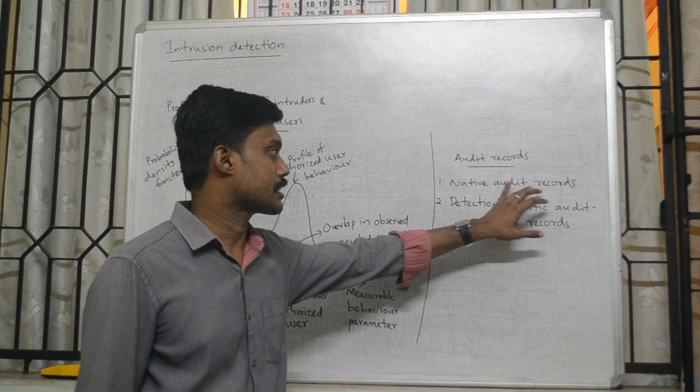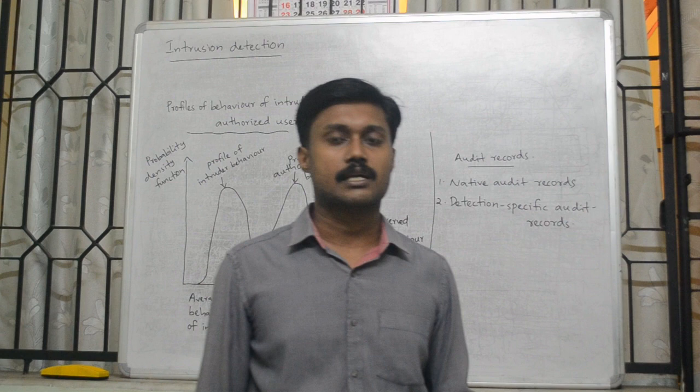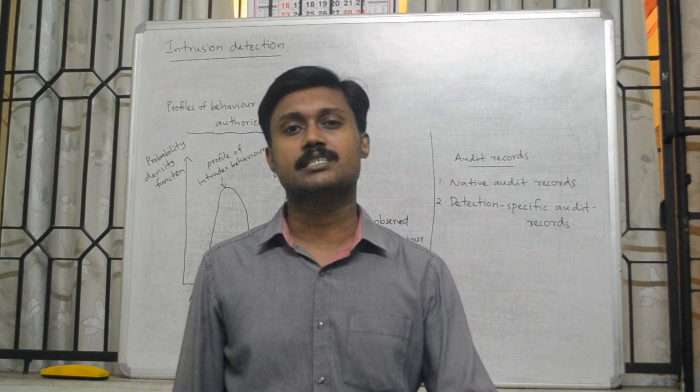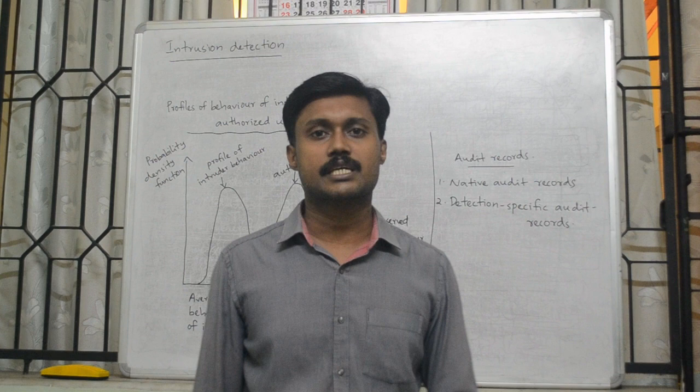It is called a Native Auditor Records — it records the ongoing activities of the users. It is called a disadvantage of Auditor Records in terms of the Intrusion Detection System. We are doing an Intrusion Detection System and performing defensive actions. The information in the native audit recording may not contain the needed information. If you have a convenient formula for the individual native audit records, we can produce ongoing activity and collective information.